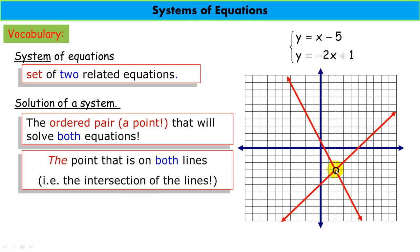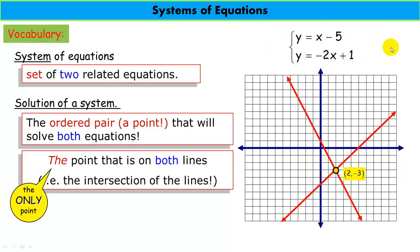Graphically speaking, it's the point where these two lines intersect. In this case here, we see 2, negative 3. If we plug that into both of these equations, we would find that x equals 2 and y equals negative 3 satisfies both equations. Therefore, it is the solution to the system. Please understand that is the only point that can possibly reside on both of these lines.